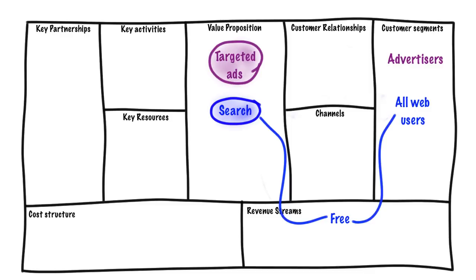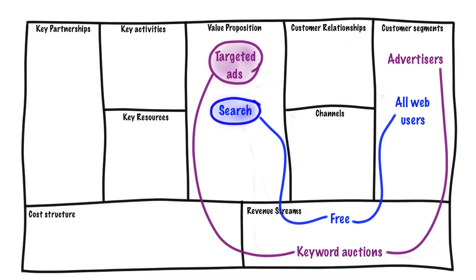So they're serving the customer segment of advertisers here. And of course, they came up with one of their main innovations: keyword auctions. Keyword auctions is where advertisers specify, by means of a keyword, when their ads should appear, and they can actually bid on the keyword. So if you've got a very popular keyword, you are going to pay quite a lot. If it's something more off the beaten track, you could get keywords at a very reasonable price. But that led to the main revenue stream of Google.